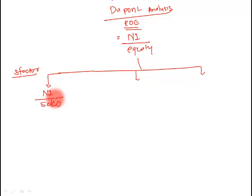Net income divided by sales is nothing but net profit margin — how much profit you earn on your sales. If you've invested money in a business, one way to achieve a higher return on equity is to sell at a very high profit margin. Another way is to generate a high amount of sales. So you can increase profit either through a high margin, high sales volume, or both. The second factor is sales divided by assets.